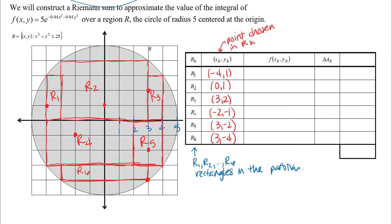Just like when you did Riemann sums for calculus 1, once you've chosen a point in each little piece of the partition, the idea is that you use that point to find a function output — you plug that point into the function. The function we're using here is our f(x, y) that we're constructing the Riemann sum for. So we plug in (−4, 1) and I'm just going to write a few decimal places, rounded to three decimal places. Since I'm going to build this with Legos, I'll round that to a whole number. So I'm going to write down a few decimal digits for all of these, but round to whole numbers so that we can build it.